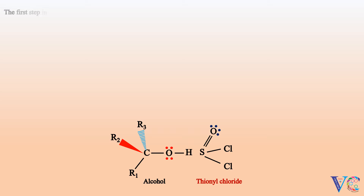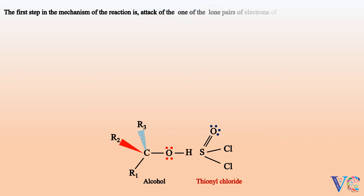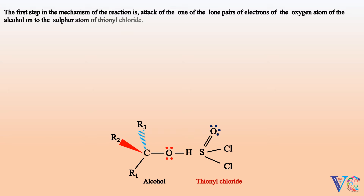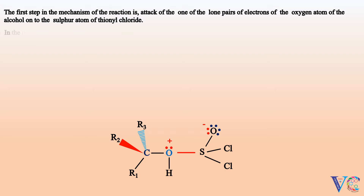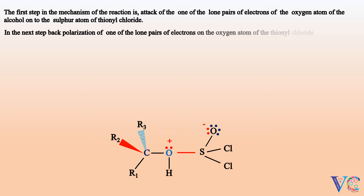The first step in the mechanism of the reaction is attack of one of the lone pairs of electrons of the oxygen atom of the alcohol onto the sulfur atom of thionyl chloride. In the next step, back polarization of one of the lone pairs of electrons on the oxygen atom of the thionyl chloride leads to the elimination of chloride ion.